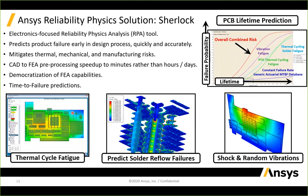The approach involves thermal cycle fatigue, predicting solder reflow failures, shock and random vibration, and putting it all together to quantify the associated risk for each component: vibration fatigue, thermal cycling of solder, plated through hole thermal cycling, and then an overall combined risk for the PCB. At a given point in the lifetime—whether one, five, or ten years—this gives the probability of failure given all those conditions. These S-curves contrast with constant failure rate actuarial databases, which never include real physics and can't capture true reliability.